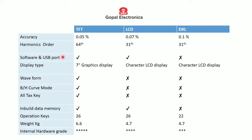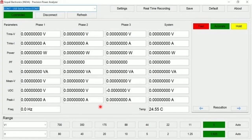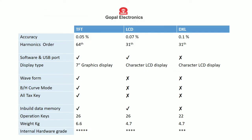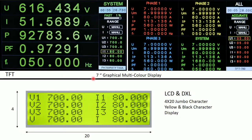Software and a USB port are provided in the TFT and LCD models only — they are not provided in the DXL model. This is our software, showing all parameters of measurement including measurement speed, and you can do real-time recording using the software.